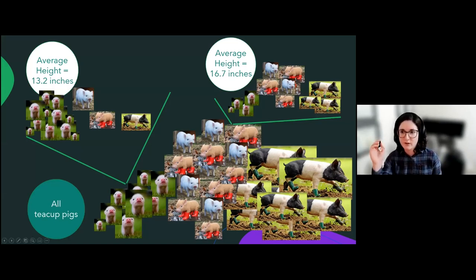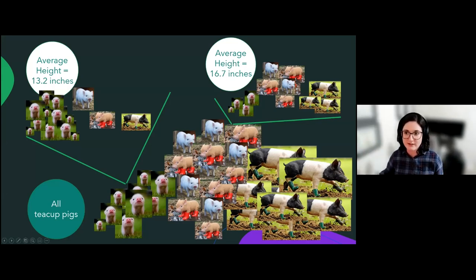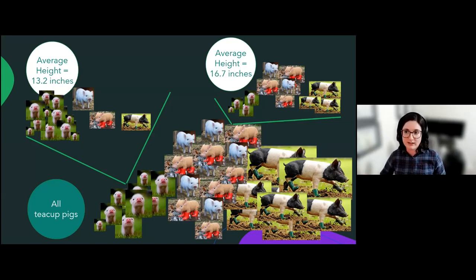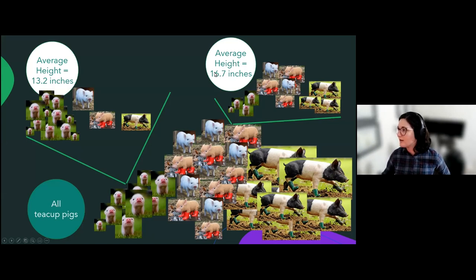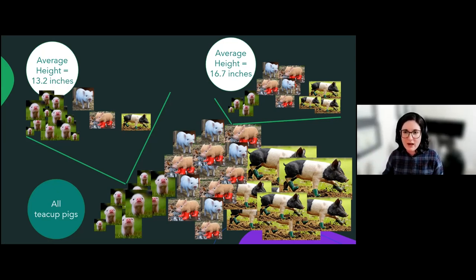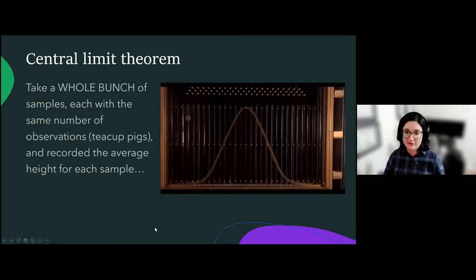When you take a sample, you don't know whether your sample is super lopsided because you got it by chance, or because that's really just what the population looks like. So we need to figure out a way to give ourselves some wiggle room in our average — a way to figure out how sure we are of our mean. The way we do this in statistics is something called the central limit theorem.